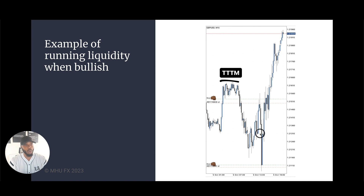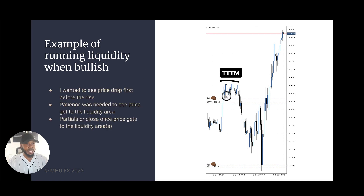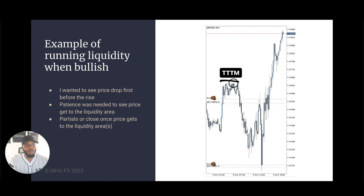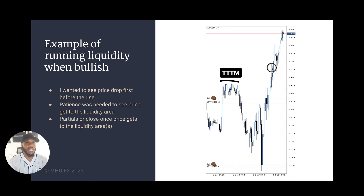When price gets to that liquidity area, I'm either closing off positions or taking partials. Once I entered from down here, you always have to be thinking: where are the willing participants who want to continue my buy? Who wants to take my position from me? I look on the chart to see where people want to buy. If I'm buying from this low, the people that want to buy are above this high. When price runs that liquidity, it can turn around — so take partials or close to make sure you've taken something off the trade.